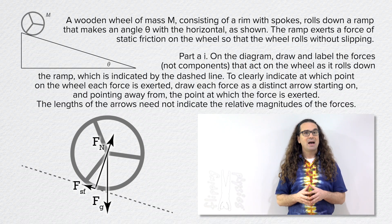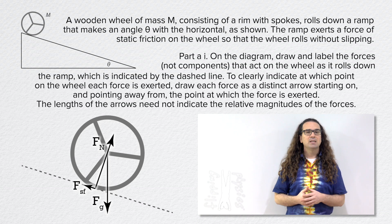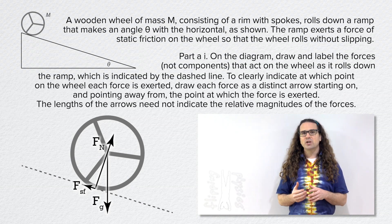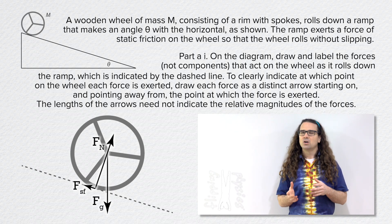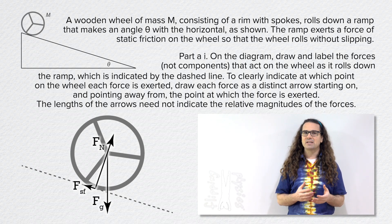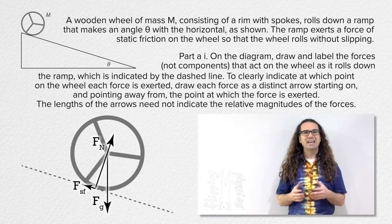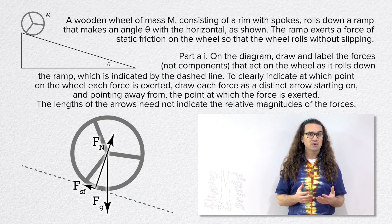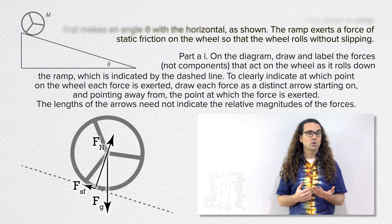Some notes about how this problem was graded by the College Board: problem number one is worth seven points, and two of those points are just for getting this free body diagram correct — roughly 30% of the points from this problem. When drawing free body diagrams, all forces need a clear indication of where they start and their direction. If you are not confident in your drawing, you can always clarify a force's start location and direction using words.